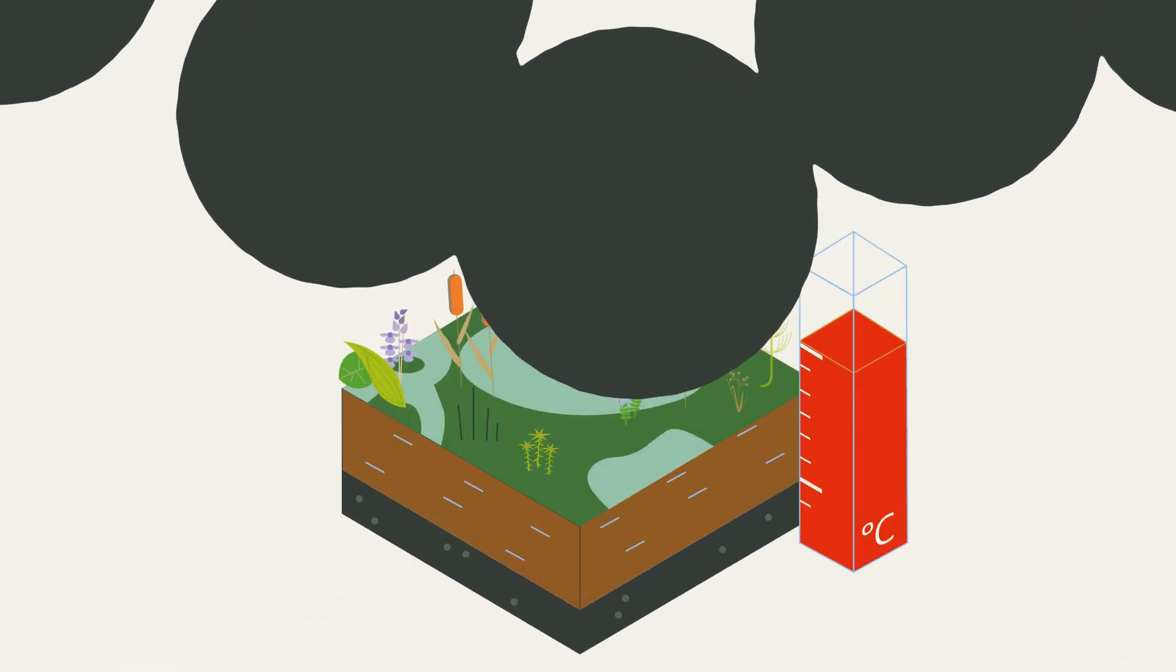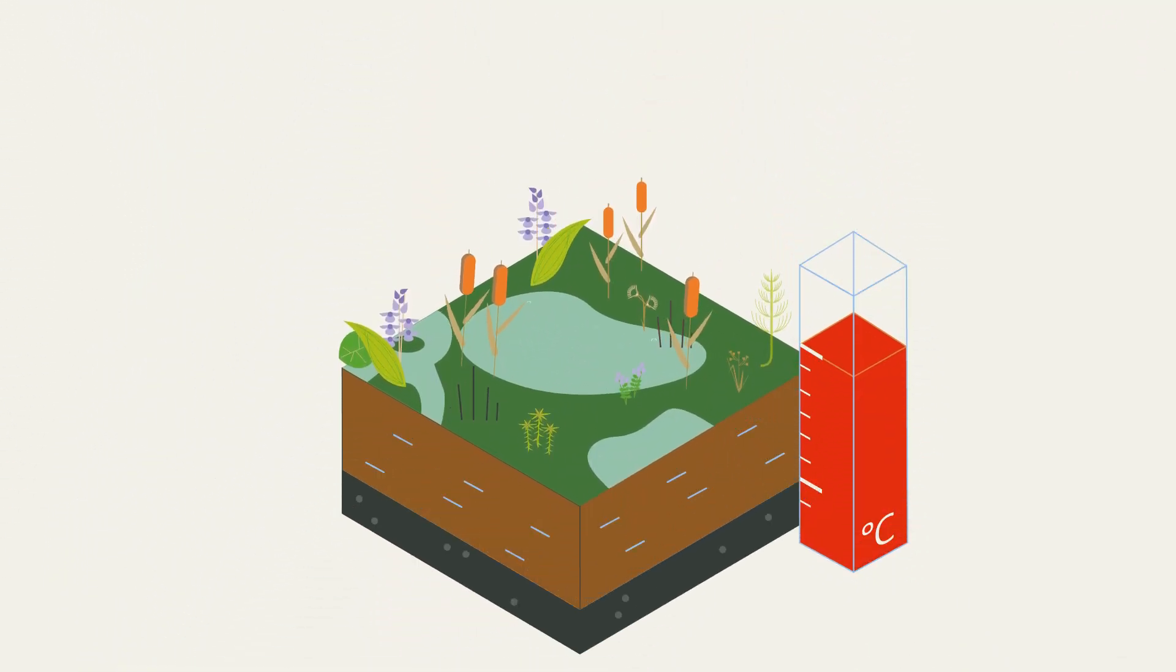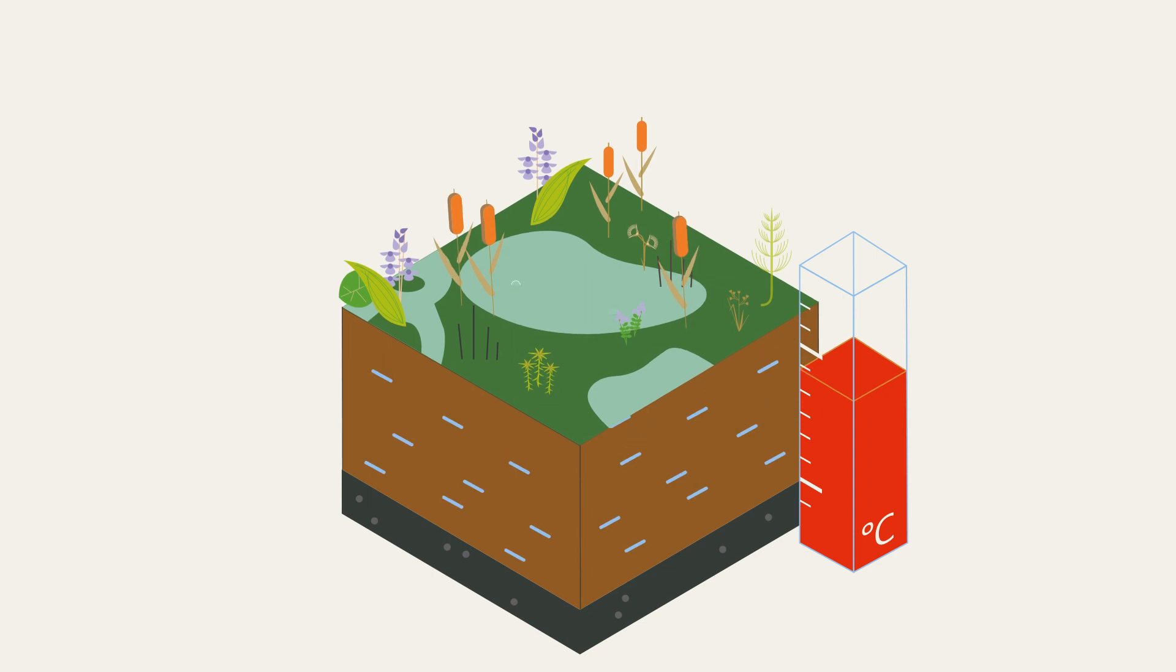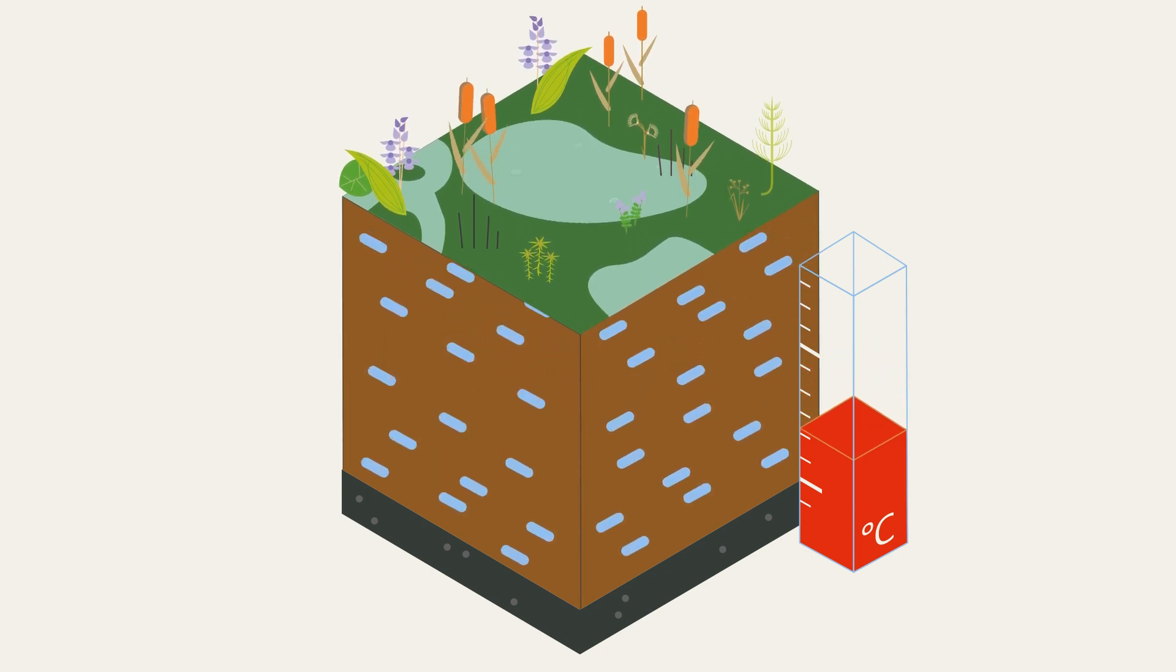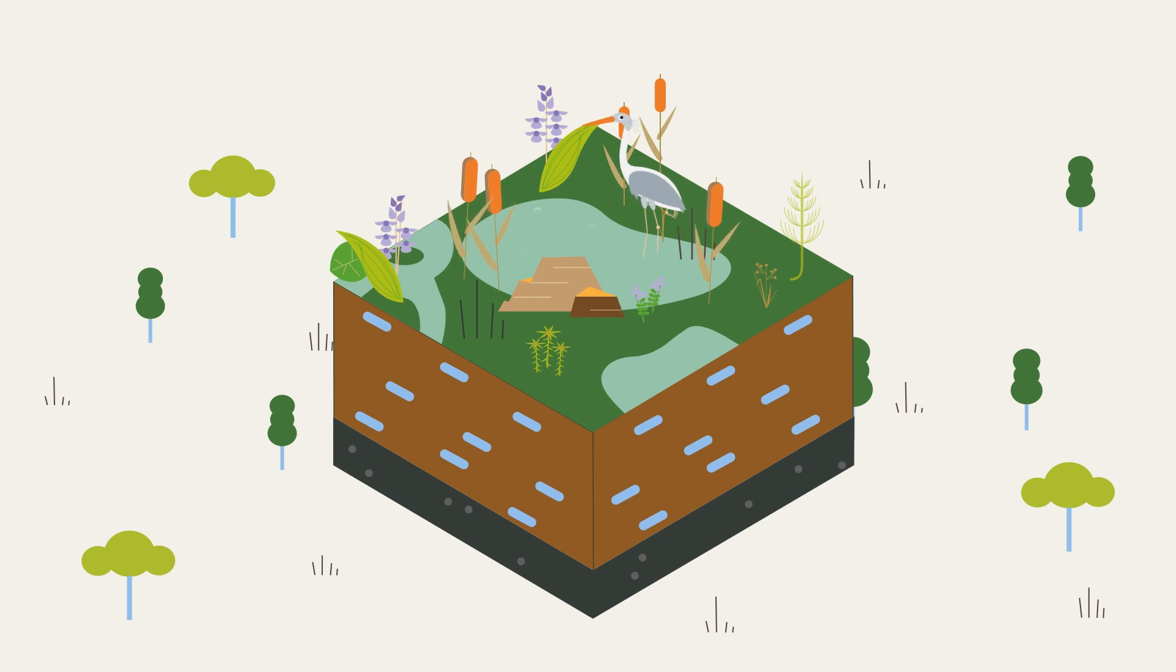And now, the good news. When it comes to climate protection, peatlands are our allies if we let them. Most climate-friendly are intact peatlands. We need to protect these by preventing their drainage.